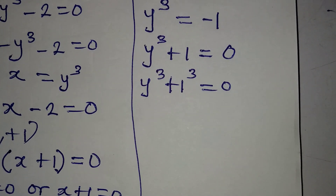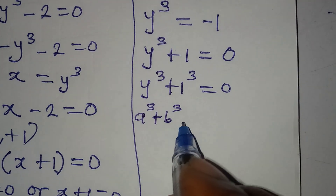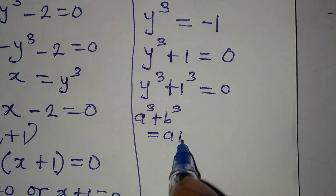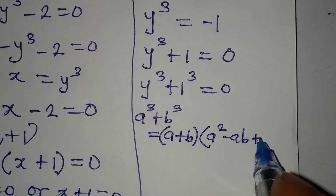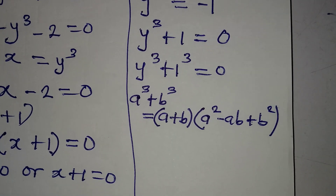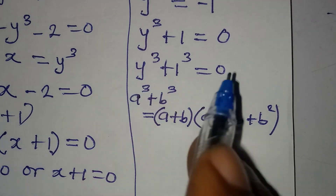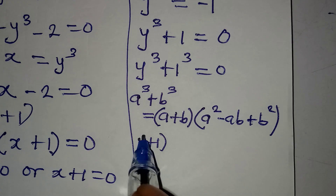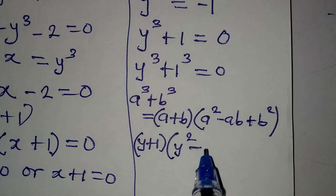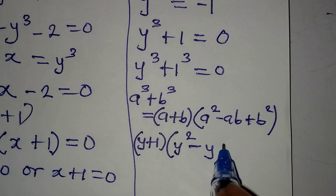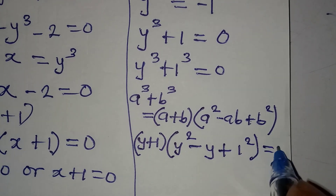We can apply a standard identity to deal with this. Remember that a to the power of 3 plus b to the power of 3 equals a plus b, times a squared minus ab plus b squared. Applying the same principle here: a plus b becomes y plus 1, so we have y plus 1 in the first bracket. Then a squared becomes y squared, minus ab becomes minus y times 1 which is minus y, and plus b squared becomes plus 1 squared. Everything is equal to 0.